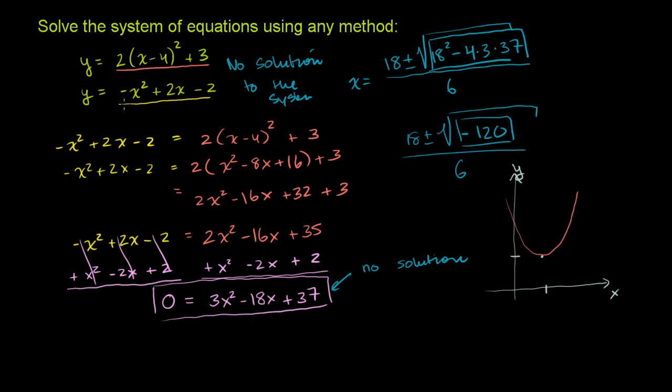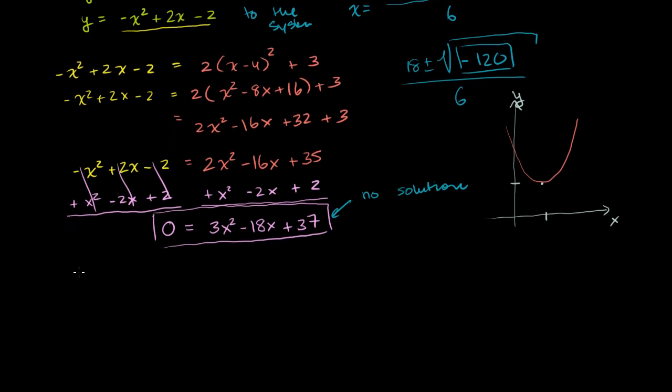Now what will this thing look like? Well, it's a downward opening parabola. And we could actually put this in vertex form. Let me do that. Let me put the second equation in vertex form, just so we have it, so we have a good sense.